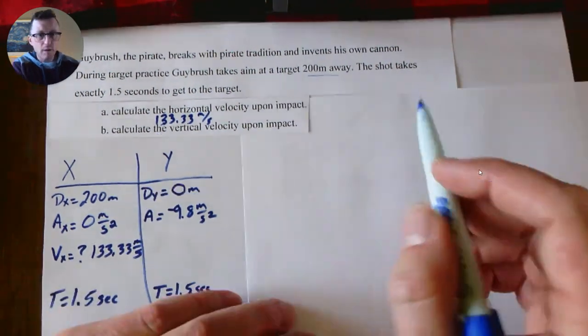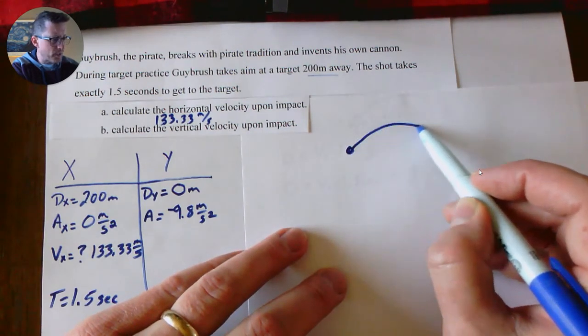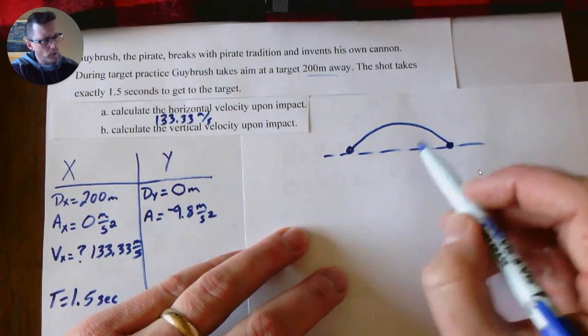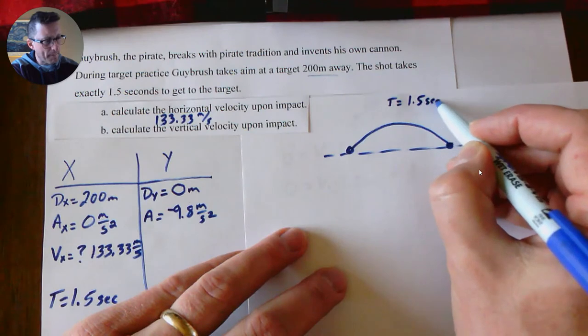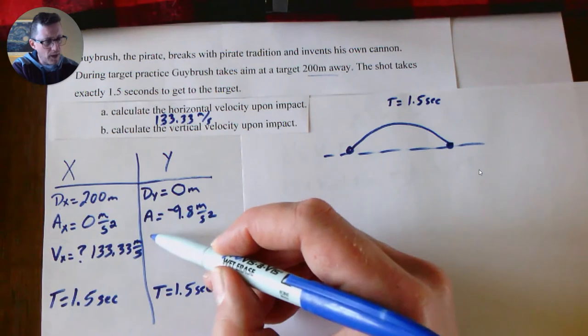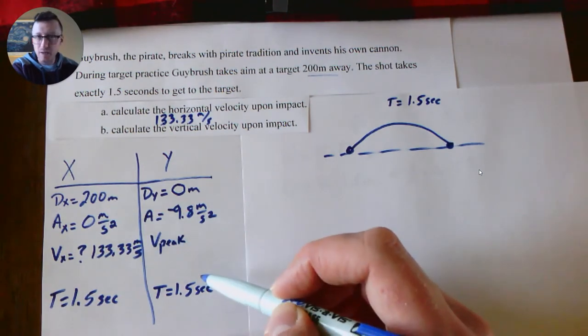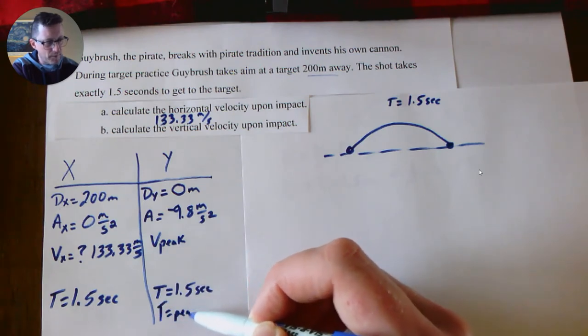And if you look at this, we really don't seem to know anything else. However, my picture doesn't show—so let's think about this. When you launch a projectile, when it lands, we know that the total time is 1.5 seconds, right? What do we know about the velocity in the y direction at the peak, and what do we know about the time at the peak?